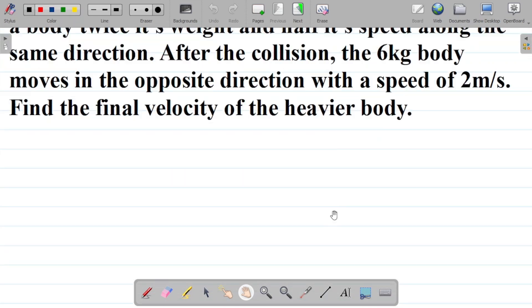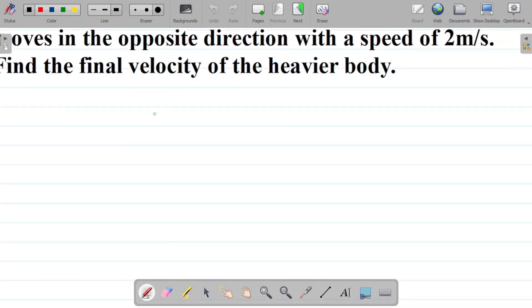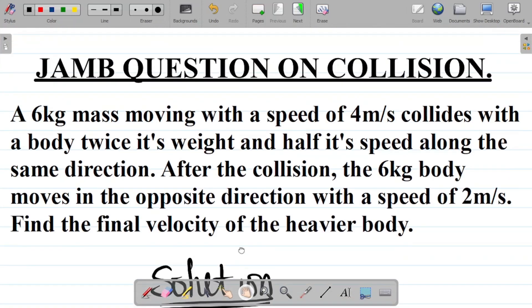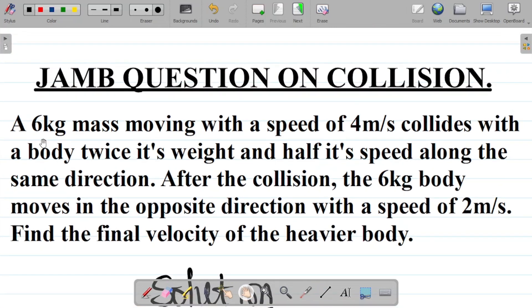So how do we solve this question? Solution. Our first task would be to, in this question, identify that we have two bodies here. We have the first body having 6 kg mass and the second body having twice its body weight.